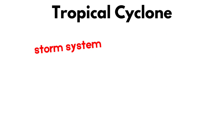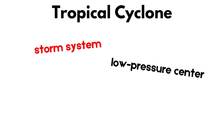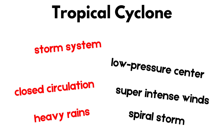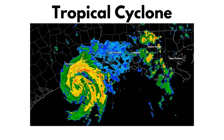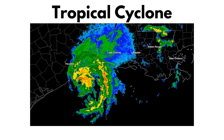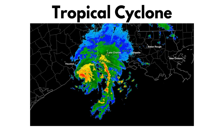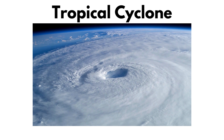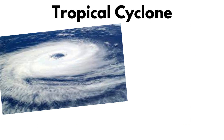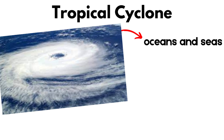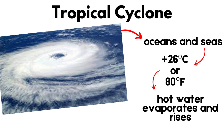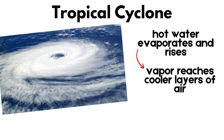Tropical Cyclone. A tropical cyclone is a rapidly rotating storm system characterized by a low-pressure center, a closed low-level atmospheric circulation, strong winds, heavy rain, and a spiral arrangement of thunderstorms. Tropical cyclones carry heat and energy away from the tropics and transport it towards temperate latitudes, which plays a significant role in regulating global climate. They typically form over large bodies of relatively warm water, usually with temperatures above 26.5 degrees Celsius, deriving their energy from the evaporation of water from the ocean surface, which eventually condenses into clouds and rain when moist air rises and cools to saturation.